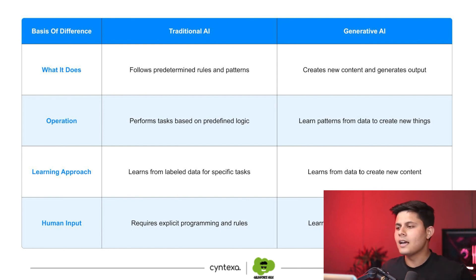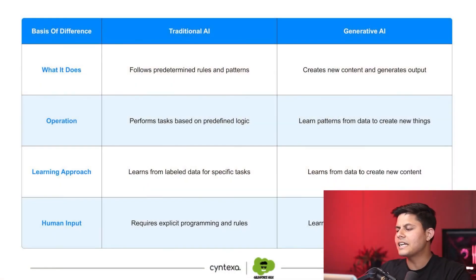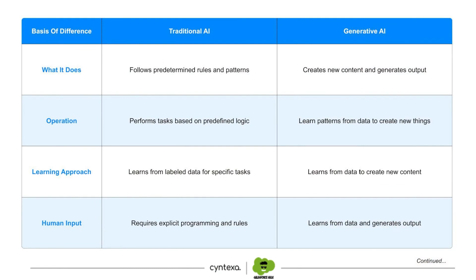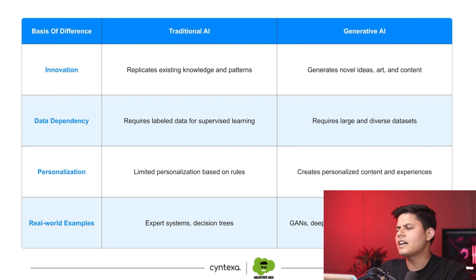Now let's look at the learning approach of both AIs. AIs are nothing but human replications programmed into a computer. Learning approach is important because if an AI is not going to learn things on its own, it is nothing but another application or software. Traditional AI learns from labeled data for specific tasks, whereas generative AI learns from data to create new content. Traditional AI requires explicit programming and rules, while generative AI learns from data and generates output.